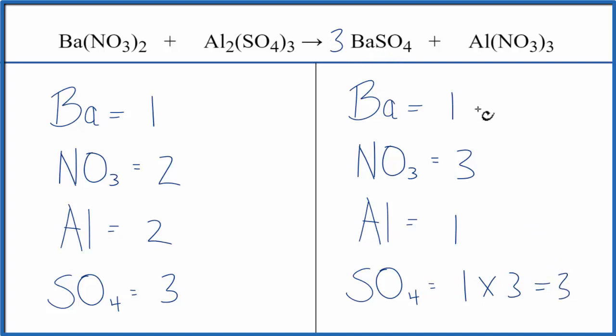One times the three, we now have three bariums. Might as well balance the bariums. I'll put a coefficient of three in front of the barium nitrate. One times three. That balances the bariums.